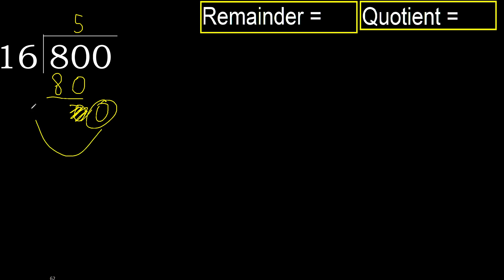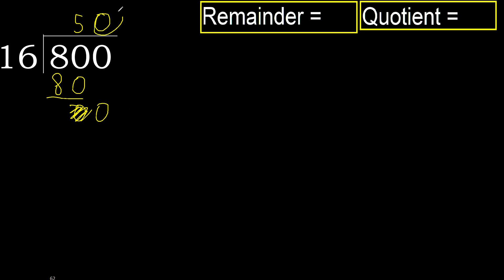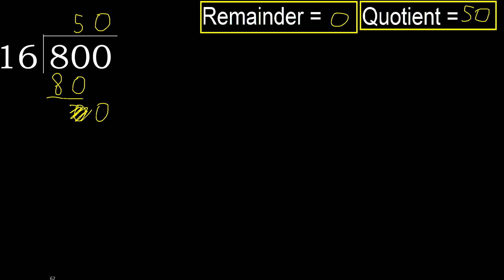0 is less, therefore next. There is no next number, therefore finish it — complete. Always complete with 0. Complete because here, finish it with this number. Therefore 800 divided by 16 is 50.